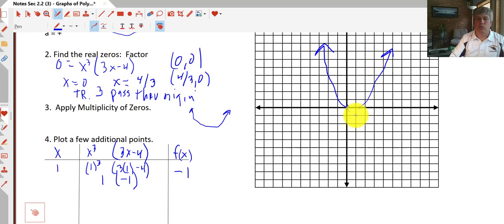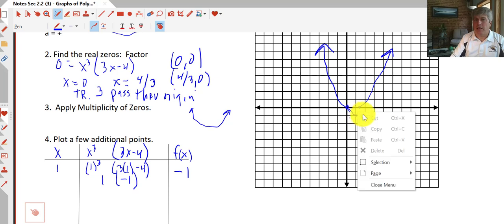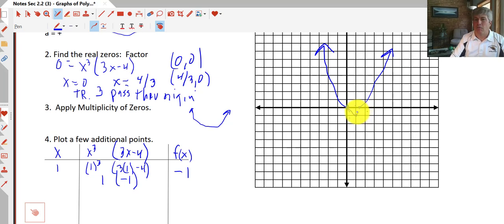Now we don't really care too much because this is a sketch of what happens here between 0 and 1 and what happens between 1 and 4/3. We know we're going to pass through. We have to hit that point and we know we're going to pass through 4/3 coming the other way. So our graph is going to look something like that.